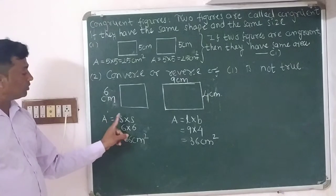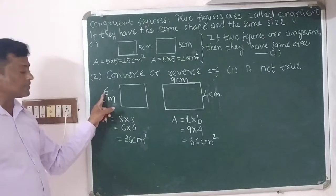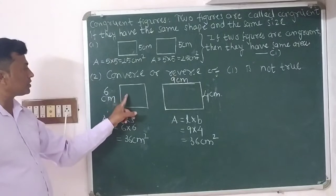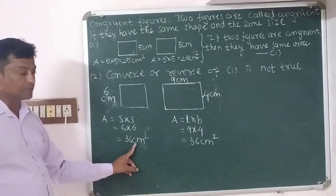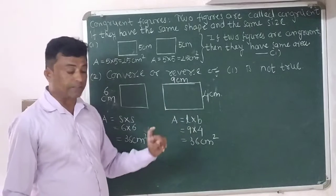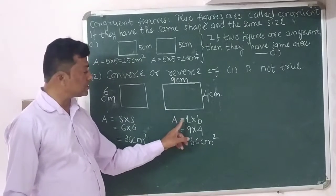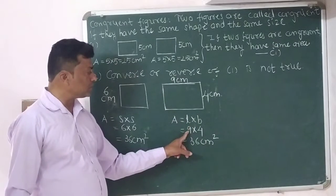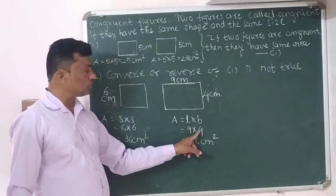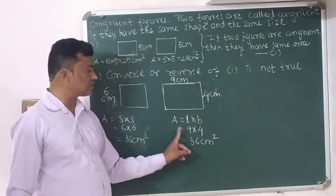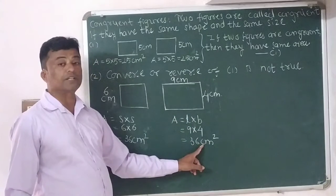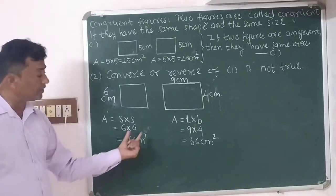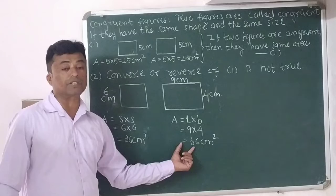Area of the square equals side multiplied by side. The side length is 6, so 6 multiplied by 6 equals 36 centimeter square. Area of the rectangle equals length multiplied by breadth. Length is 9 and breadth is 4, so 9 multiplied by 4 equals 36 centimeter square. Area of the square is 36 centimeter square and area of the rectangle is also 36 centimeter square.